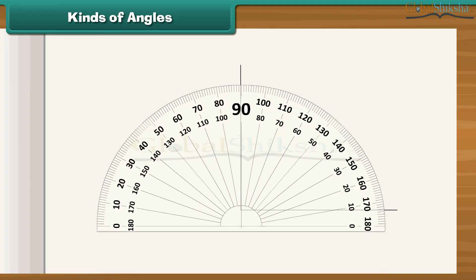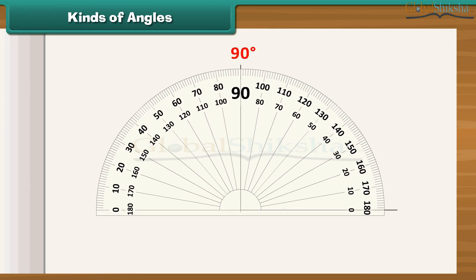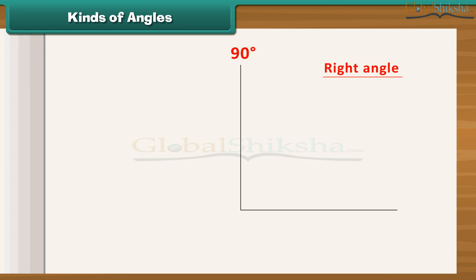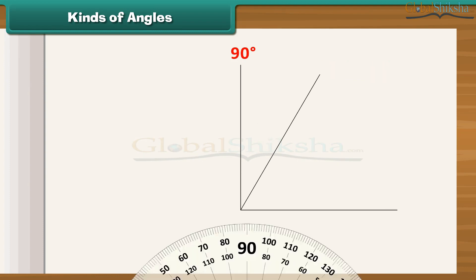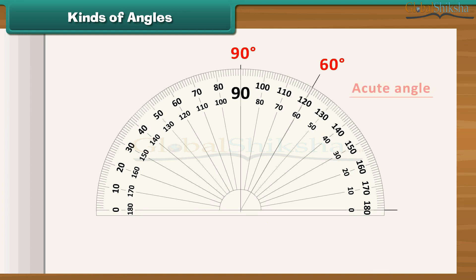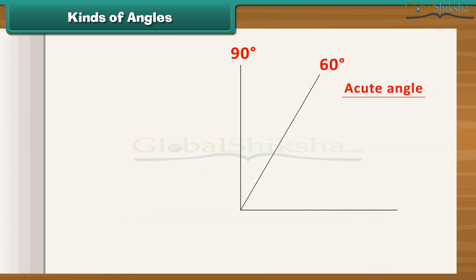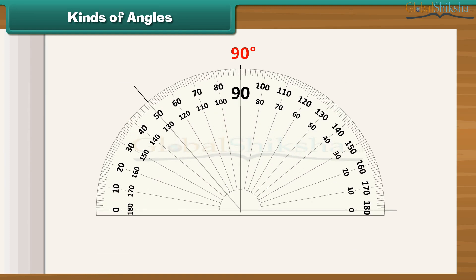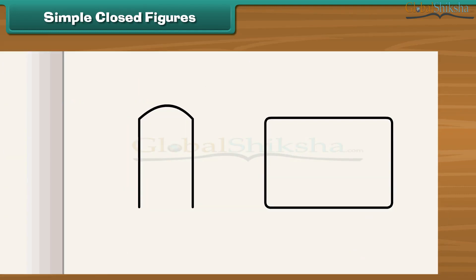An angle whose measure is 90 degrees is called a right angle. An angle whose measure is less than 90 degrees is called an acute angle, while an angle whose measure is more than 90 degrees is called an obtuse angle.